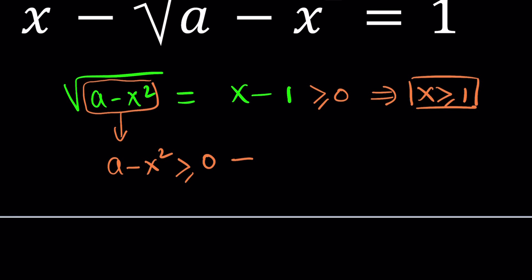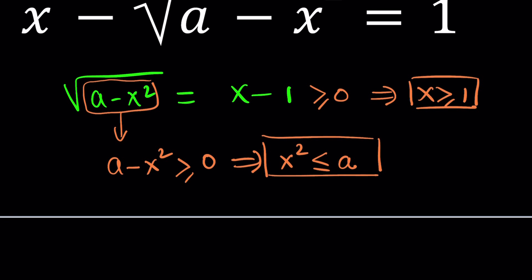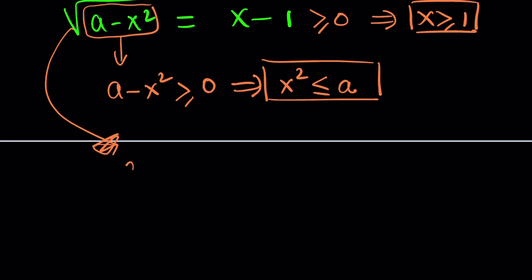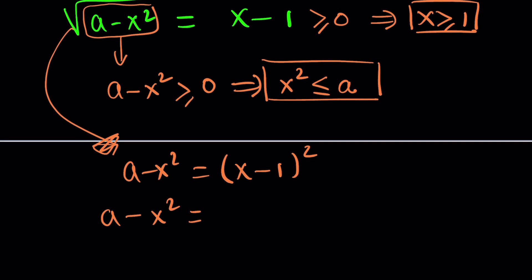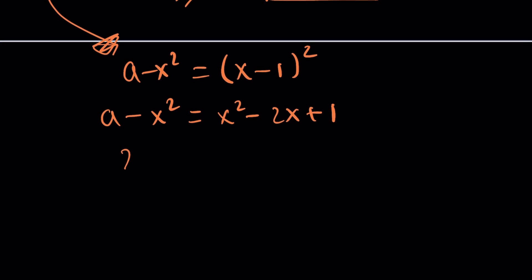So let's go ahead and isolate x squared. This implies x squared is less than or equal to a. I'm going to save this for later use, and now we can go ahead and square both sides. That allows us to get rid of the radical, and this gives us a minus x² equals x² minus 2x plus 1, and if you put everything on the same side, you get 2x² minus 2x plus 1 minus a equals 0.